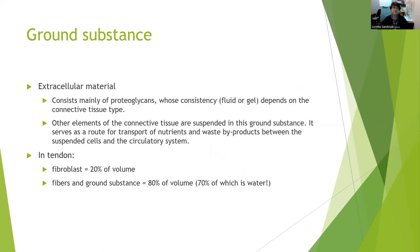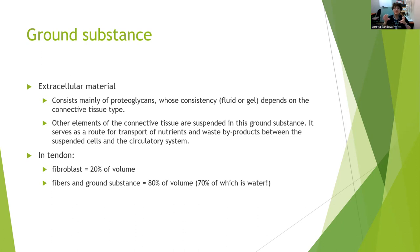Ground substance refers to the extracellular material, which is mainly proteoglycans — a fluid or gel consistency depending on the connective tissue type. The ground substance serves as a route for transport of nutrients and byproducts of cellular metabolism. In between the suspended cells and the circulatory system is the ground substance. In a tendon, which is pretty dense, fibroblasts — the cells making collagen — make up about 20% of the volume. The fibers, collagen and elastin, plus the ground substance make up 80% of the volume, and 70% of that 80% is water. So we have a lot of water in our connective tissues. If we're dehydrated, our connective tissues are not going to be able to absorb or transmit as much force because they'll be more brittle.